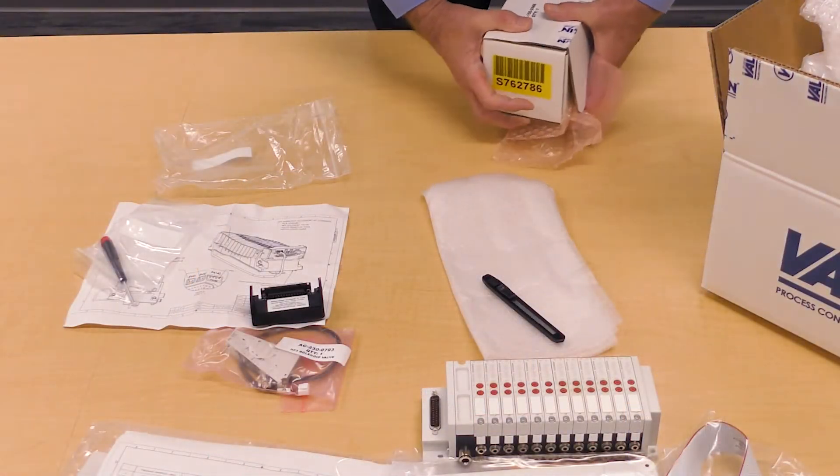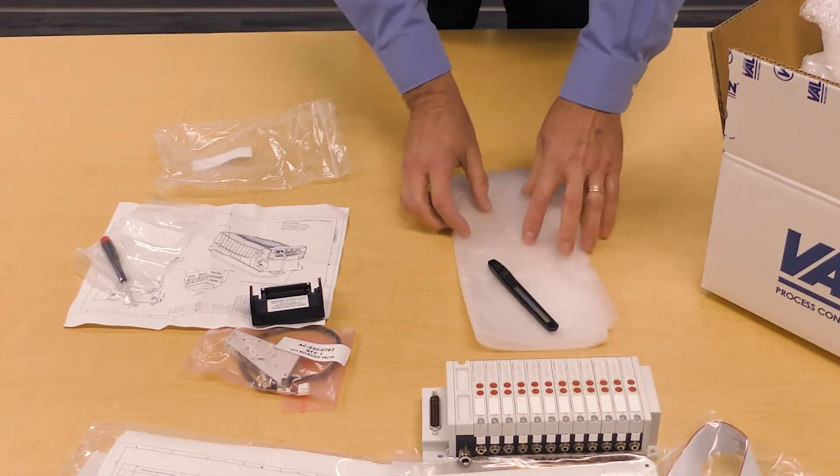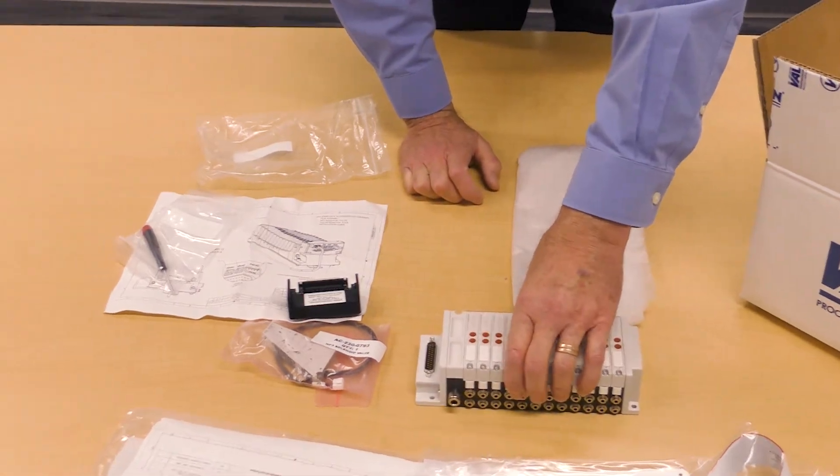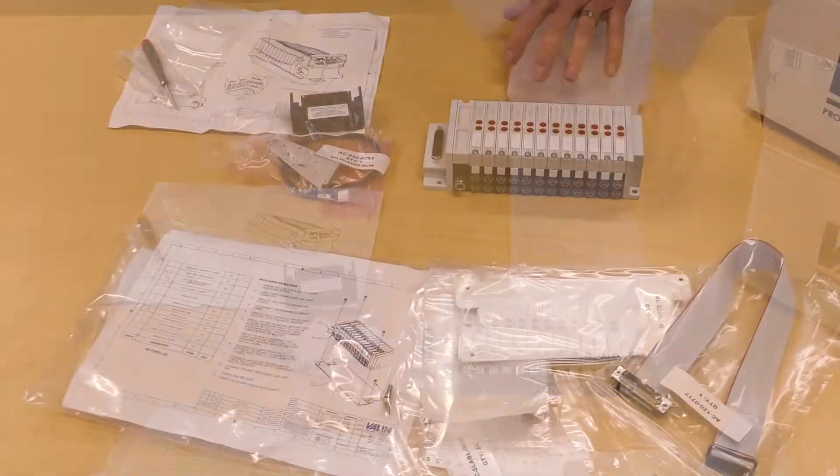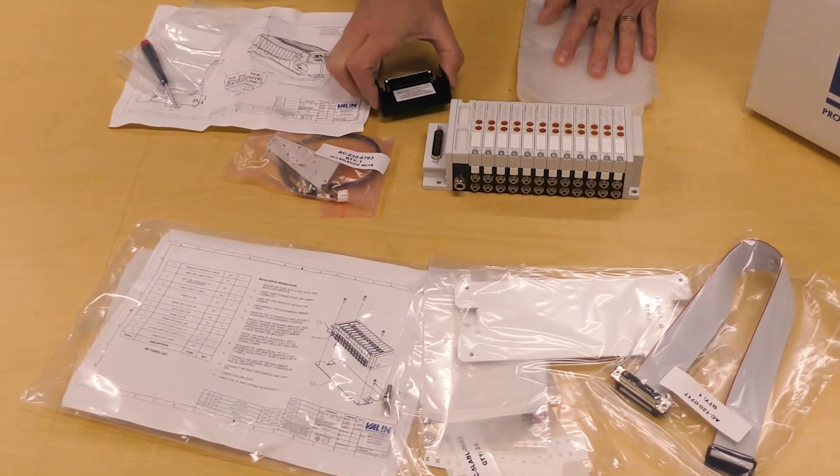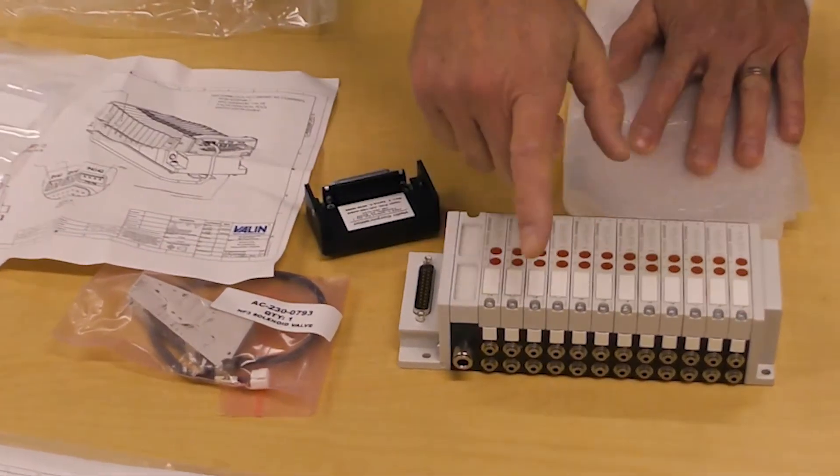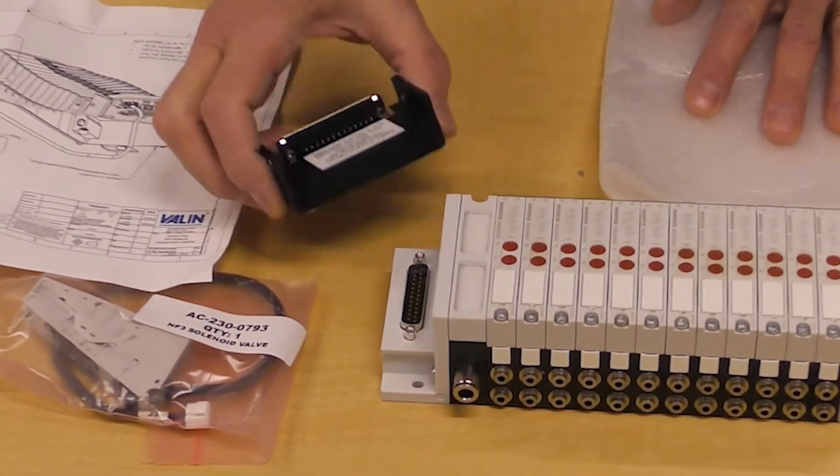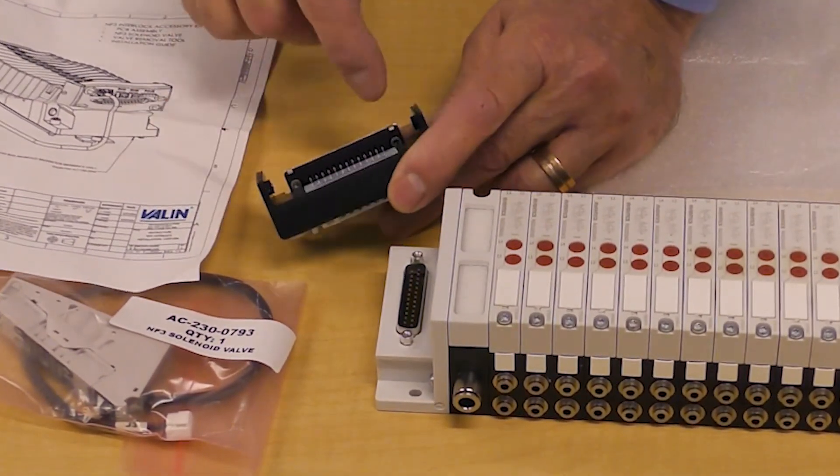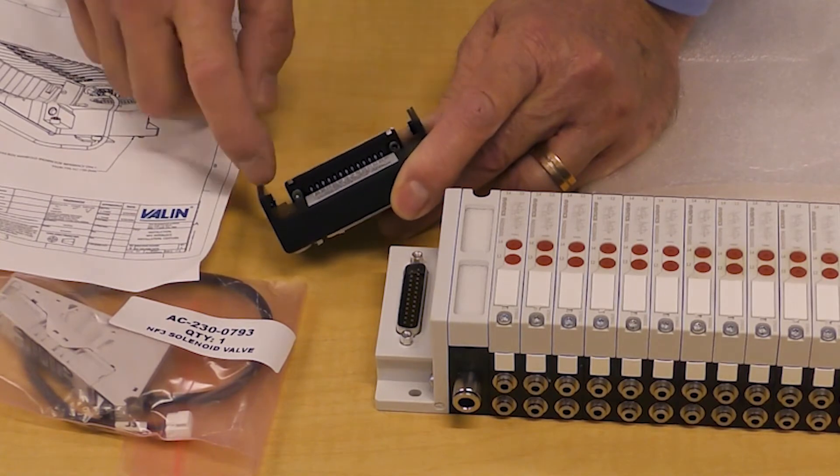Now I will demonstrate mounting the kit to my gas box manifold. To do this we will need not too many tools. We'll need our special tool to remove the valve here and we'll also need our Allen key driver for these screws.